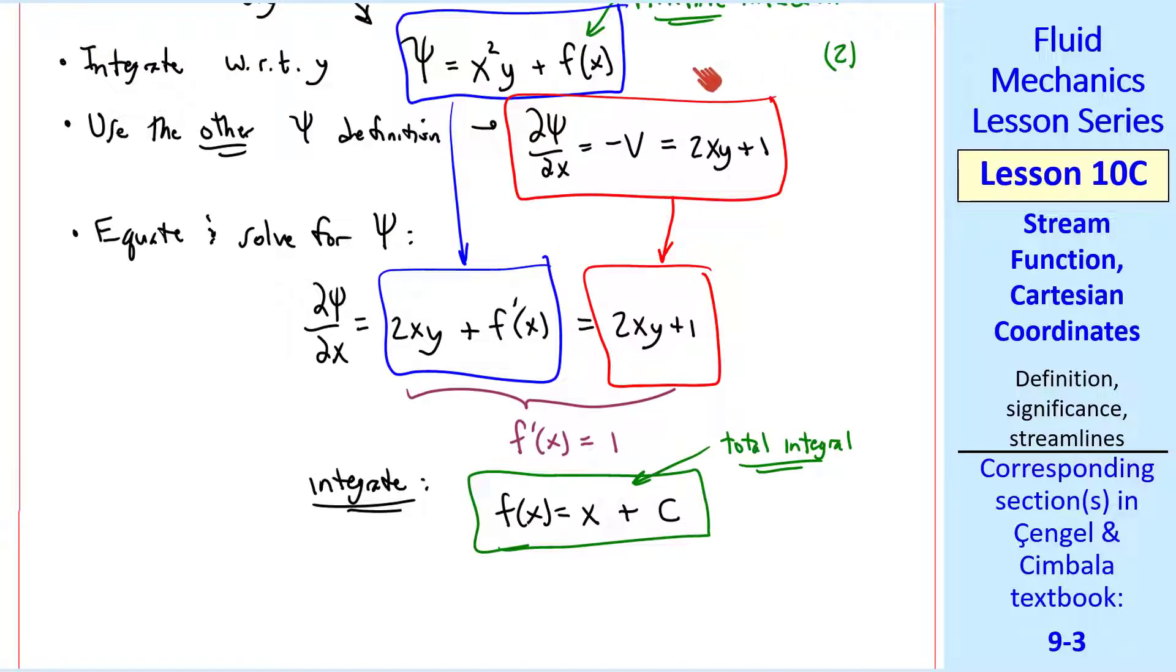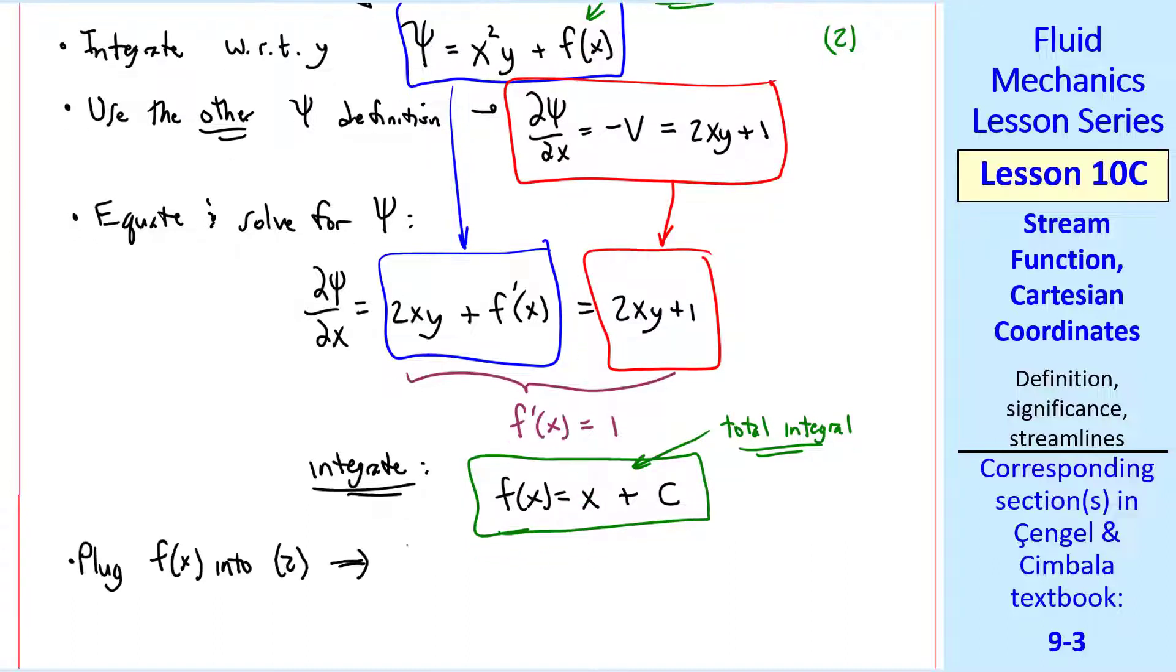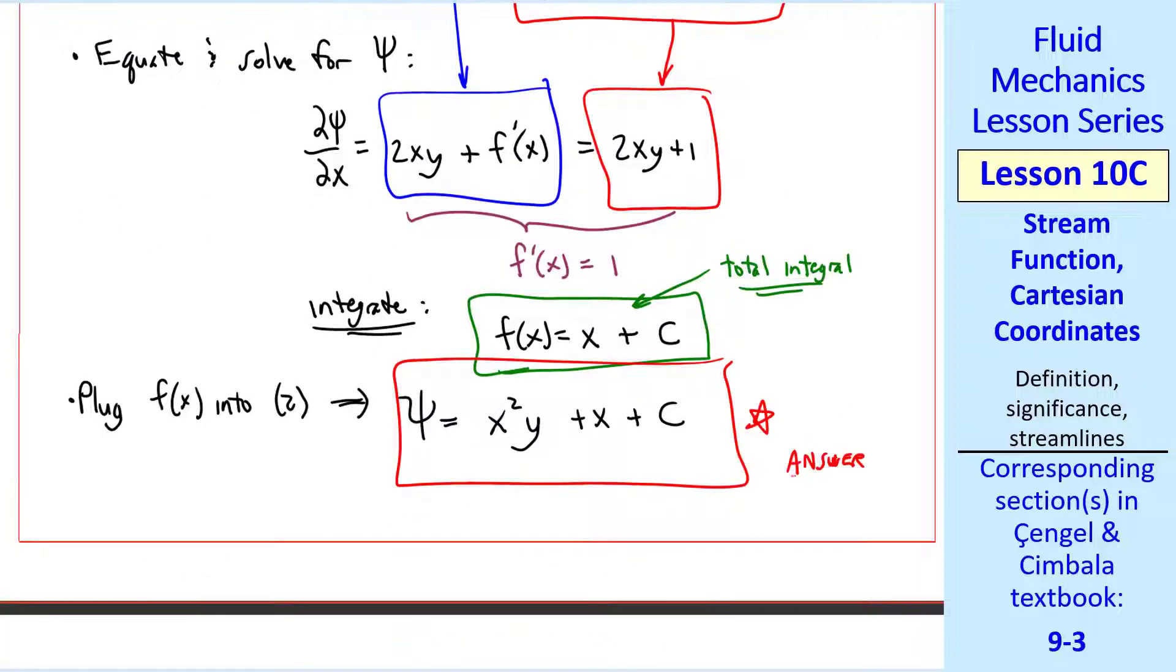Finally, I'll call this equation 2. We plug in this f of x into equation 2 to get our final answer for psi. Psi equal x squared y plus x plus some constant c which is our answer.